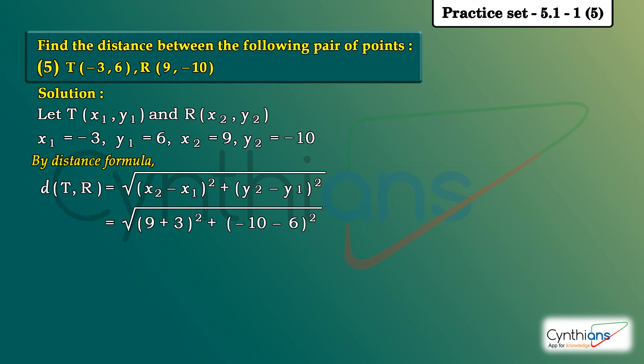Next step equal to square root of 9 plus 3 is 12, so this is 12 square. Plus minus 10 minus 6: minus into minus is plus, 10 plus 6 is 16. Sign of the greater number, 10 is bigger, sign is minus. So this is minus 16 the whole square.